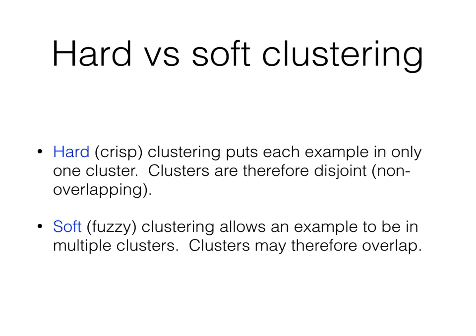We can divide clustering algorithms into hard clustering and soft clustering. Hard clustering, often called crisp clustering, puts every data point in only one cluster, so clusters don't overlap. Soft clustering, or fuzzy clustering, allows a data point to belong to more than one cluster at the same time, so clusters overlap. Tonight we'll only look at hard or crisp clustering, but if you're interested in fuzzy clustering, look at fuzzy k-means clustering.